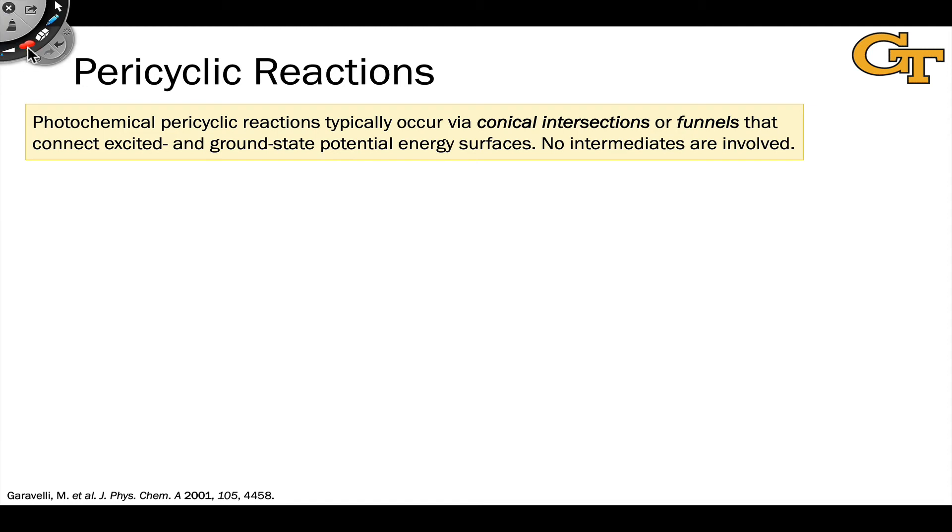An important point that's particular to photochemical pericyclic reactions is that they commonly occur via conical intersections or funnels. Thinking back to our general mechanistic paradigm for photochemical reactions, the way these typically work is there's an excitation to S1, S1 returns to the ground state potential energy surface through a very rapid movement through a conical intersection or funnel. Most commonly in photochemical pericyclic reactions, no intermediates are involved. That's not universal, but it's a good starting point.